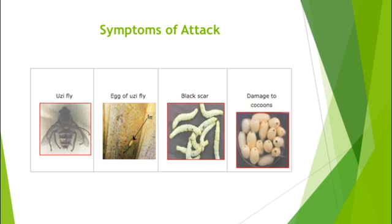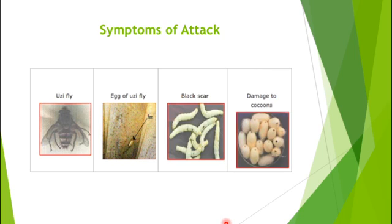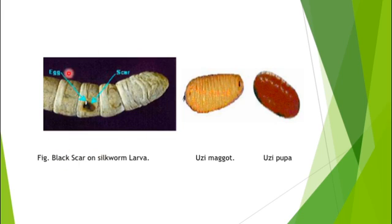Regarding symptoms of attack: a black scar is formed at the point where the egg hatches and the maggot enters the body of the silkworm. The Uzi fly uses its hooks to enter the body of the silkworm. From this black scar, the pest attack can be identified. As we can see in the picture, a black scar is visible, and they can also damage the cocoons. This enlarged view shows the black scar marking the infestation of Uzi fly on the silkworm.